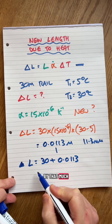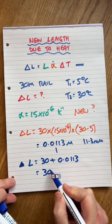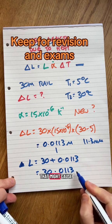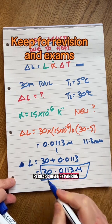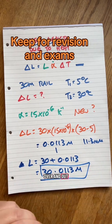So this track, the new length is 30.0113. That might cause a bit of buckling. Heat expansion, over and out.